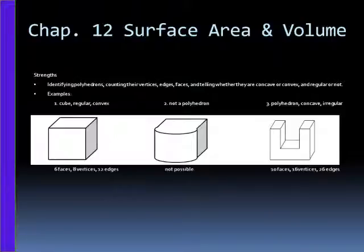Here are some examples. Example 1 is a cube. It is regular, and it is convex. It also has 6 faces, 8 vertices, and 12 edges.